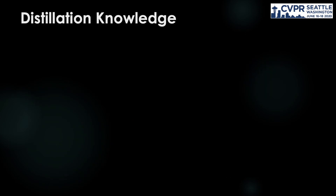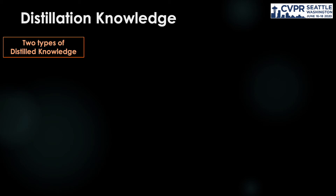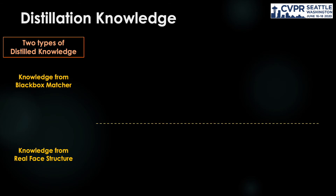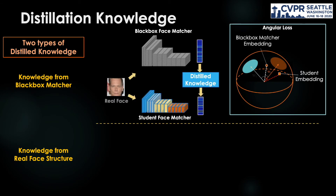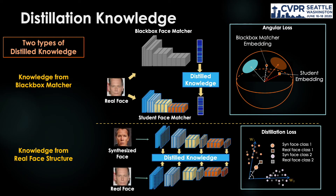There are two other types of knowledge that can be exploited for the synthesis task: the knowledge from the black-box matcher and the knowledge from real face structure. For the first type, we exploit the angular information from features extracted by the black-box matcher. This information is used to train a student face matcher to mimic the behavior of the black-box one. Then, with the knowledge about the embedding process learned by the student matcher, more guidance signals such as gradients or intermediate representations are further provided to guide the synthesis process.